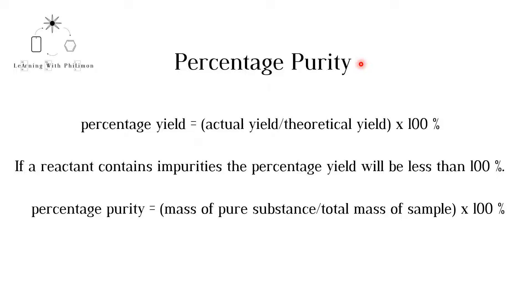In the previous video, we discussed that the percentage yield of a reaction is usually not 100%. The actual yield is less than the theoretical yield. For more on calculating percentage yield, please watch the previous video.